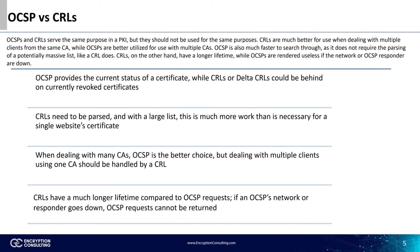When dealing with many CAs, OCSP is the better choice, but dealing with multiple clients using one CA should be handled by a CRL. Multiple clients from the same CA are handled much better with CRLs, while OCSP is best for the single client, like in web browsers.